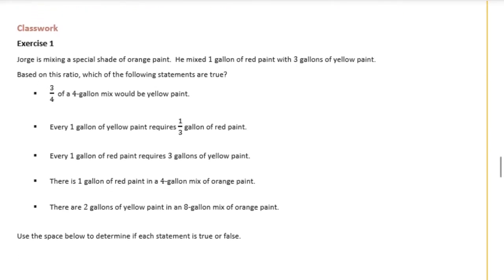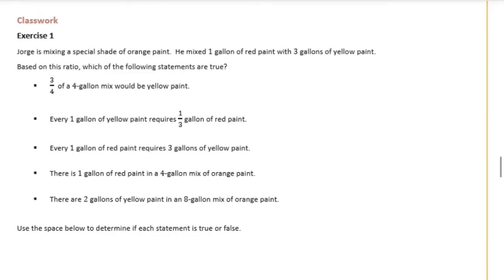Jorge is mixing a special shade of orange paint. He mixed 1 gallon of red paint with 3 gallons of yellow paint. Based on this ratio, which of the following statements are true? Use the space below to determine if each statement is true or false. Let's draw it out first — he has 1 gallon of red paint with 3 gallons of yellow paint.